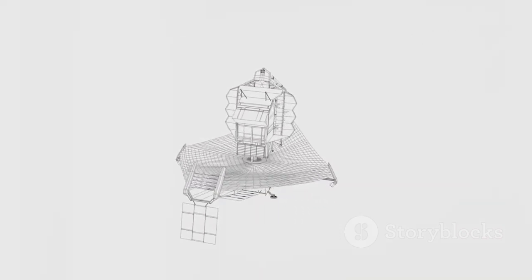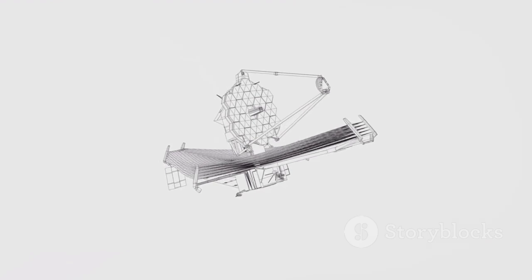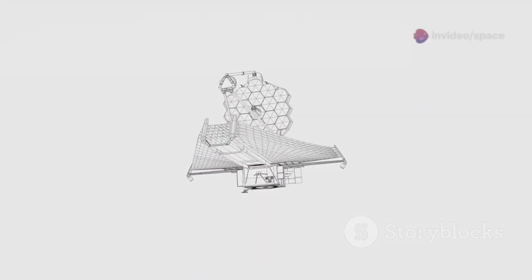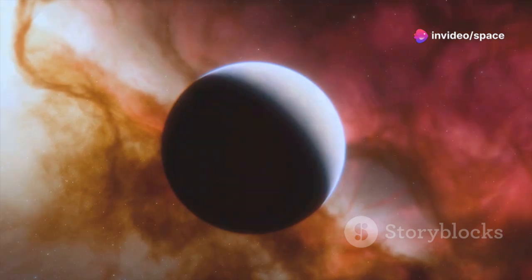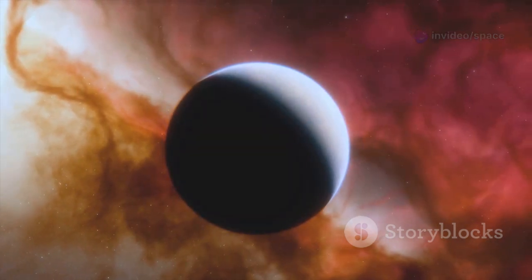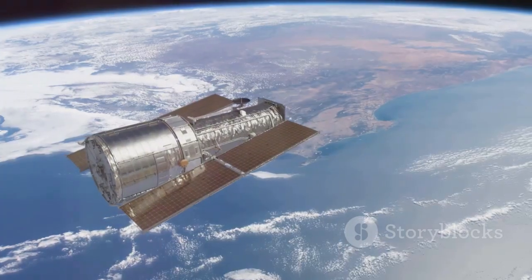To achieve this, Webb stays at a chilling 370 degrees Fahrenheit, protected from the sun by its enormous sunshield. Thanks to this engineering feat, Webb can capture stunning images of objects like 3I Atlas, showing details impossible for ground-based telescopes.